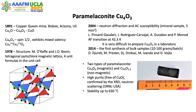Paramelaconite is the third copper oxide, in addition to cuprous and cupric oxides. It was discovered in 1891 and is a mixed valence compound indicated by spin 1/2. In 1978, the XRD was evaluated and the structure consists of a spinel-type lattice having 4 unit formulas in the unit cell.